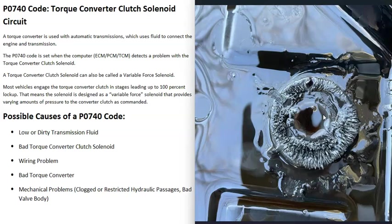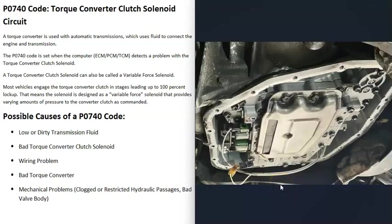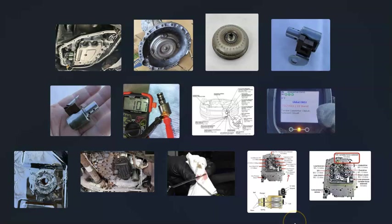The last possible cause is a mechanical problem with the transmission itself, such as a clogged fluid passageway or a bad valve body, preventing the clutch solenoid from working correctly. If this is the case, you'll usually be getting a lot of other codes as well — so pay attention to that. A high number of additional codes is a strong indicator of a broader mechanical transmission problem.